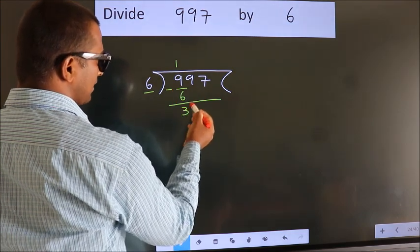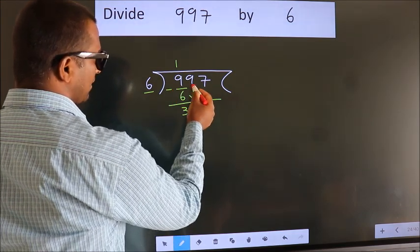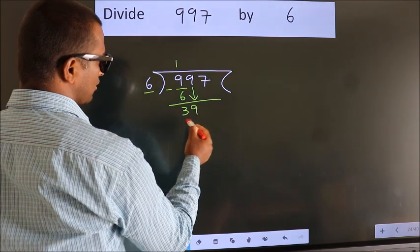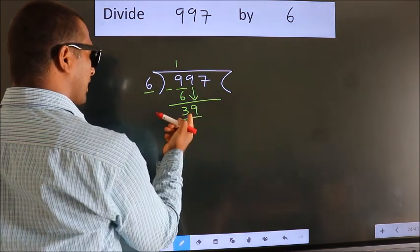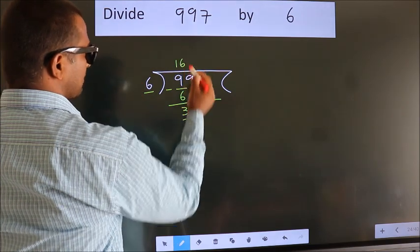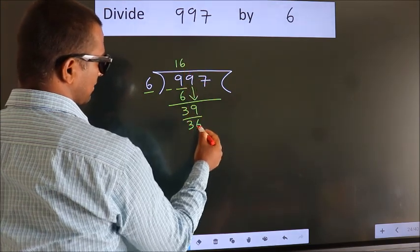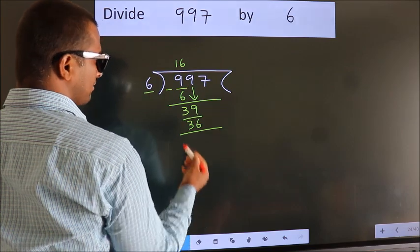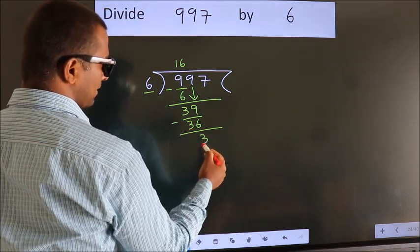After this, bring down the beside number. So, 9 down, giving us 39. A number close to 39 in the 6 table is 6 times 6, 36. Now, we subtract. We get 3.